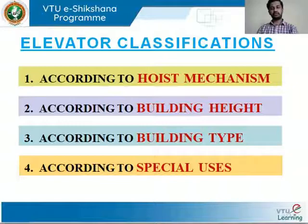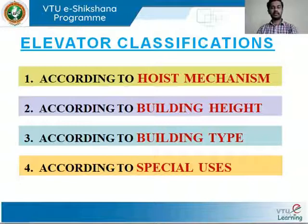Elevators are classified mainly based on four categories: first, according to hoist mechanism; second, according to building height; third, according to building type; and fourth, according to special uses. Let's understand each classification in detail.